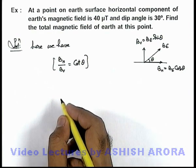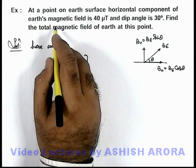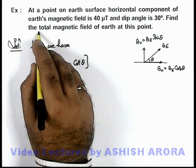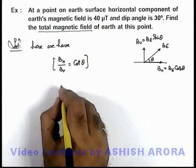But here in this situation, we are not required to relate the vertical component. We are required to find the total magnetic field of Earth, and the horizontal component is given, so we can directly use this relationship.